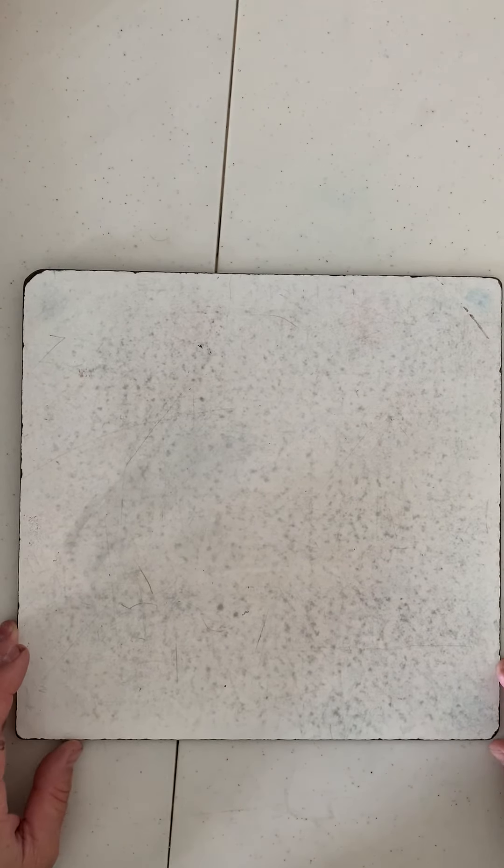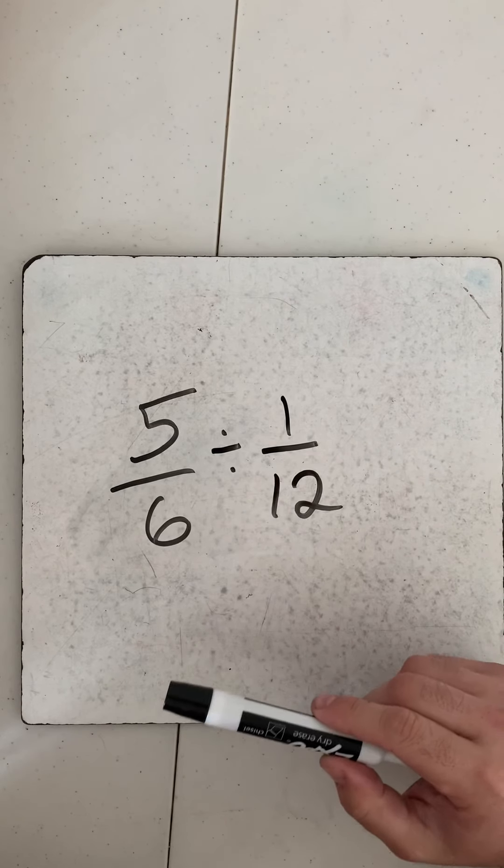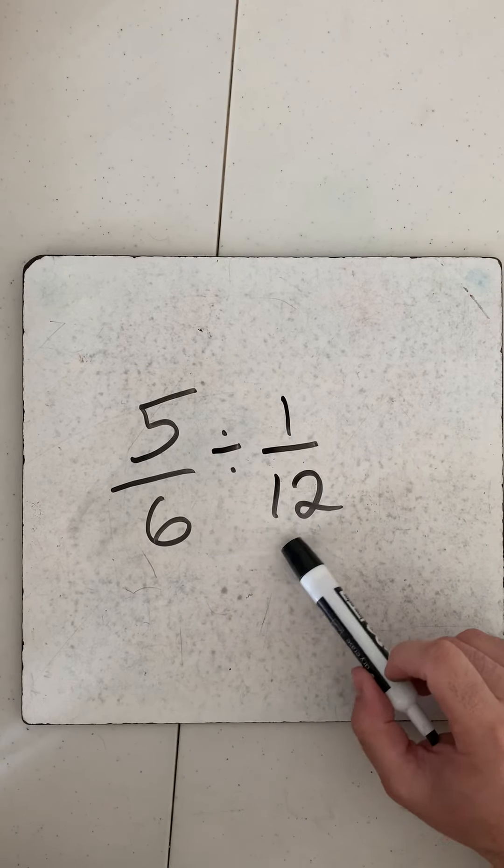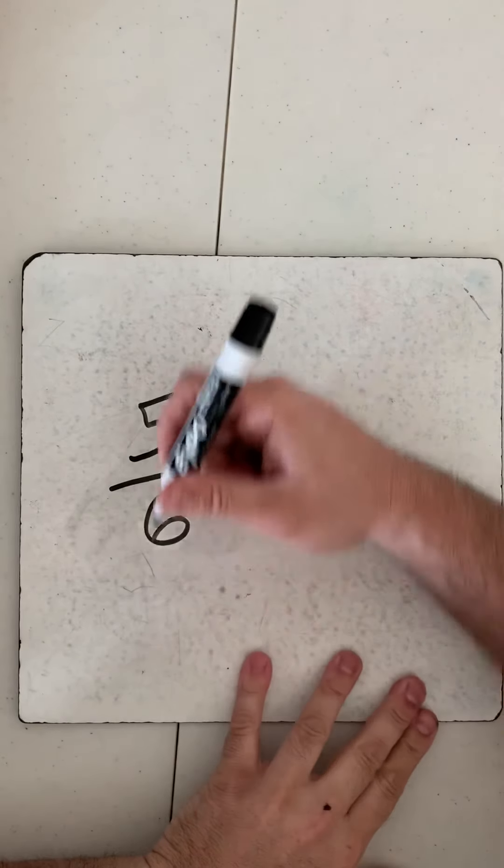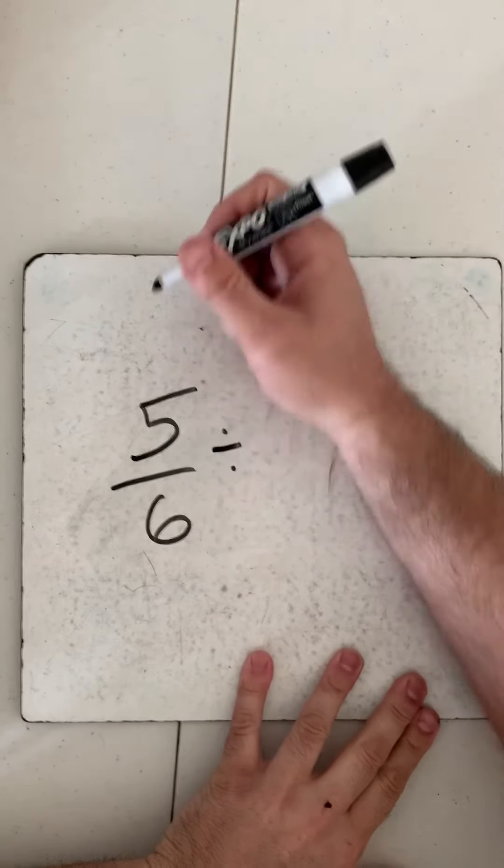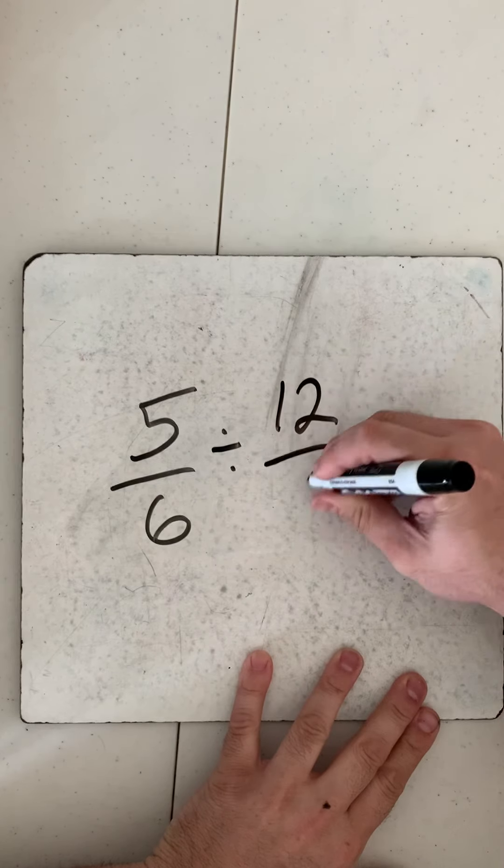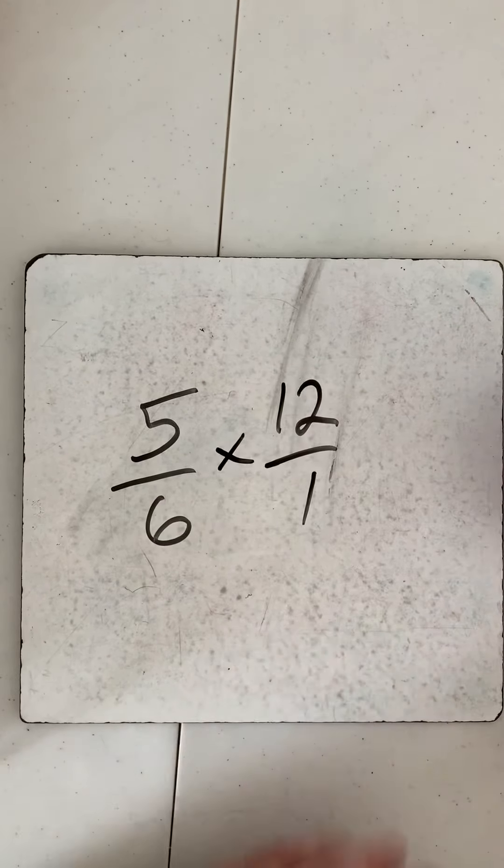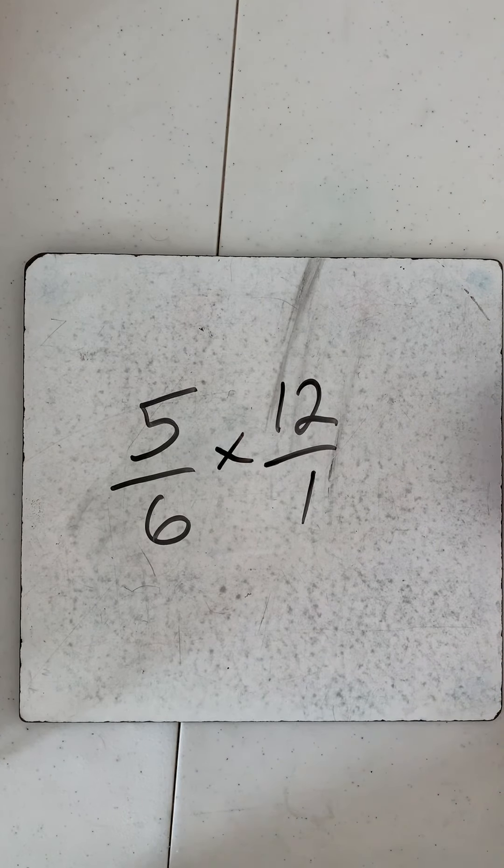We all know we're not dividing. Once we take the reciprocal we're going to change the sign. We're taking the reciprocal of the 1/12, so the second fraction. 1/12 becomes 12 over 1, and I'm going to change my sign.